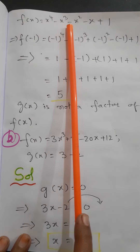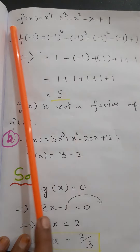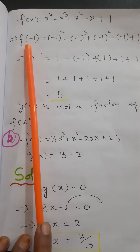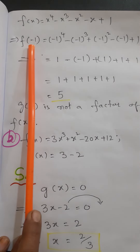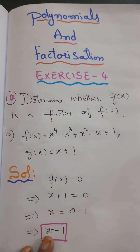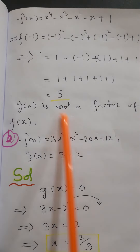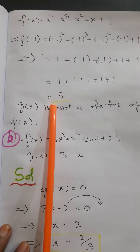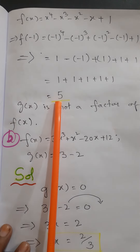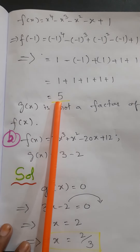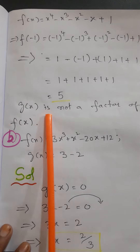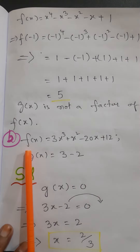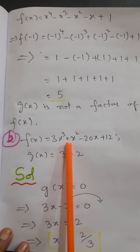Now f(x) = x⁴ - x³ + x² - x + 1. We substitute x = -1 into this function. When we substitute x = -1, the result is not equal to 0, which means g(x) is not a factor of f(x). The next part (b): f(x) = 3x³ + x² - 20x + 12 and g(x) = 3x - 2.